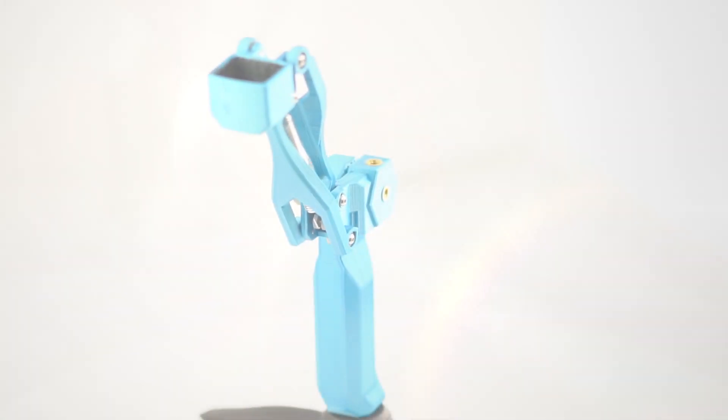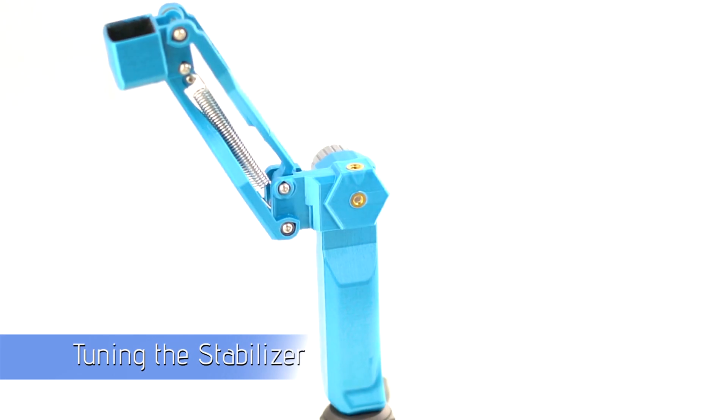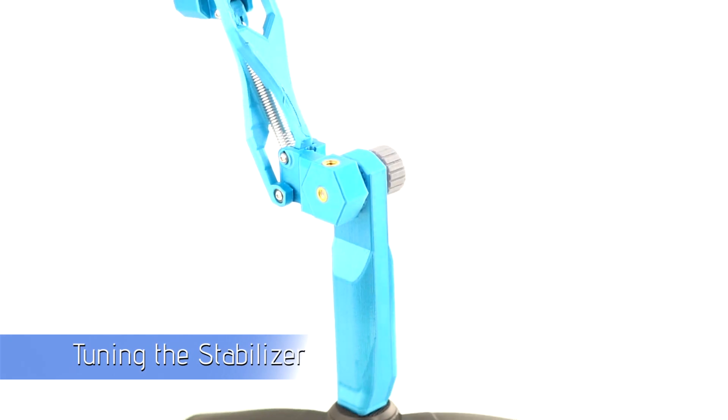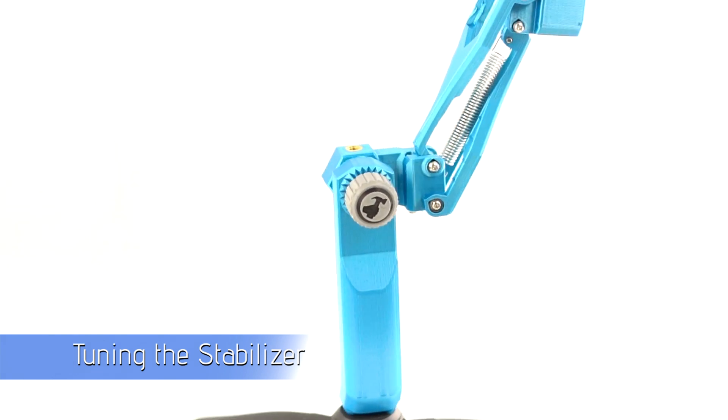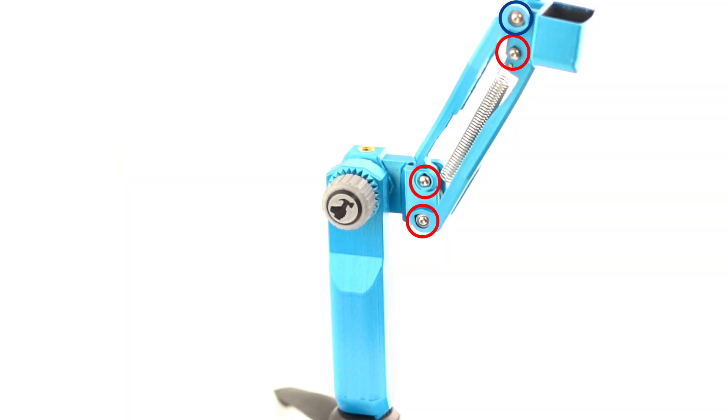Okay, and now we're going to tune the stabilizer using the eight screws to properly configure them so that the stabilizer will run as smoothly as possible. Now the top screw there is the adjuster screw. For the purposes of this example, we're going to treat it just like the other screws.